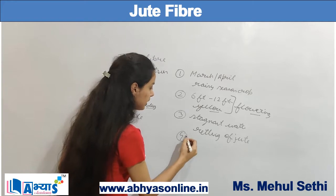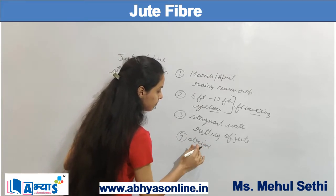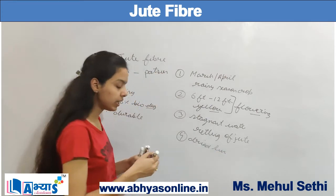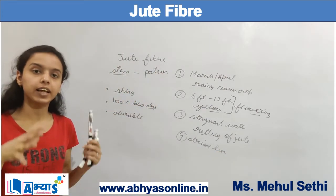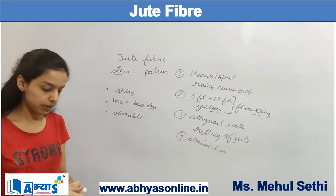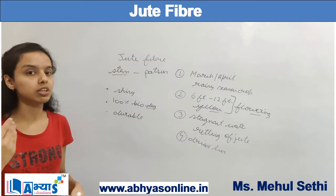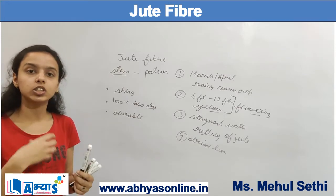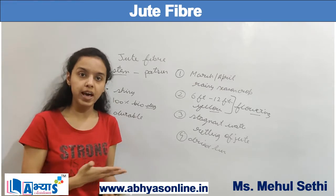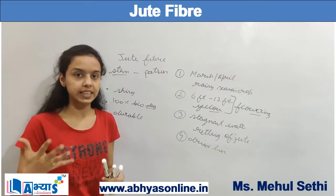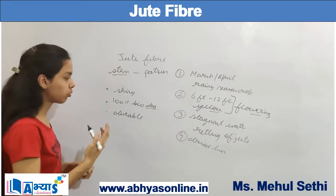The fibers are then dried in the sun. After drying, we form bundles again and send them to the mill. In the mill, various machines produce different products — some may produce jute fabric, some may produce jute bags, shopping bags, gunny bags, ropes, and so on.